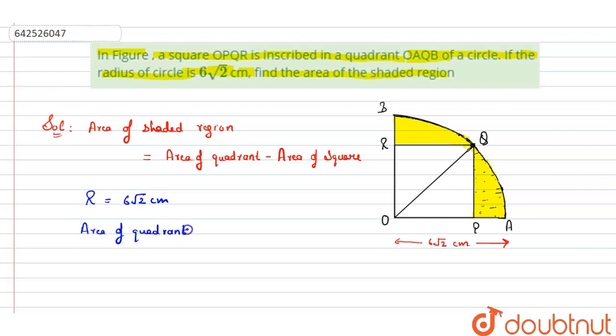That means 22/7 × 6√2 × 6√2 divided by 4. Now let's cancel it.